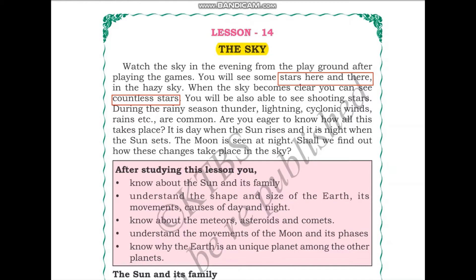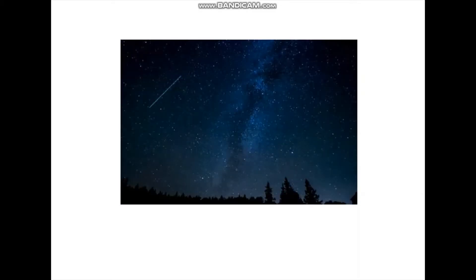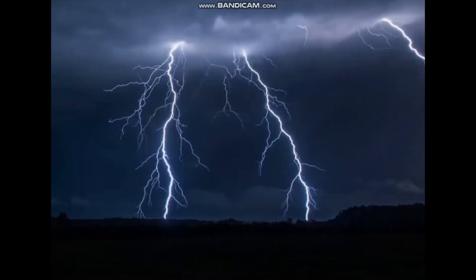It is day when the Sun rises and it is night when the Sun sets. The moon is seen at night. Let us find out how these changes take place in the sky. I will show you a picture of the night sky — you can see the moon, the stars, countless stars, and a shooting star. This is an image of lightning in the night sky, and this is an image of the full moon in the night sky.